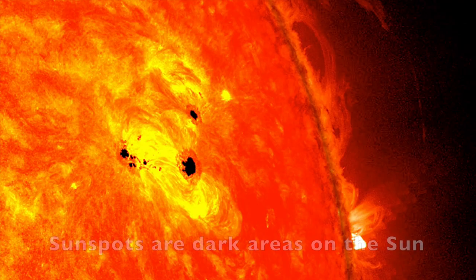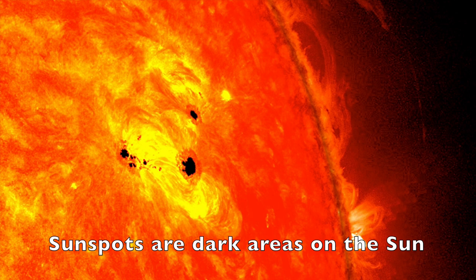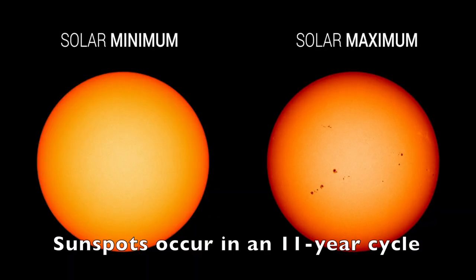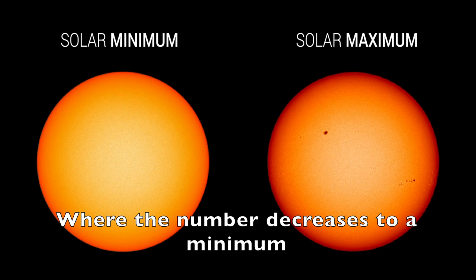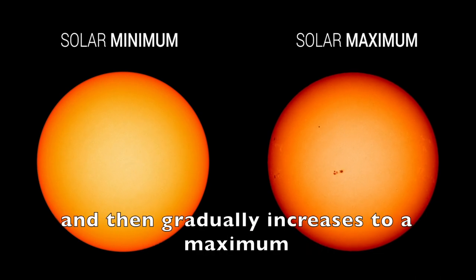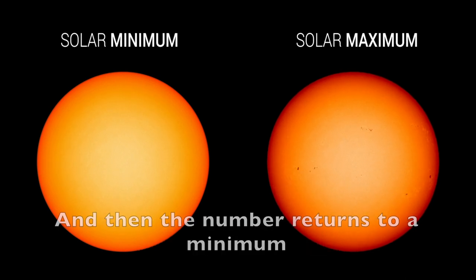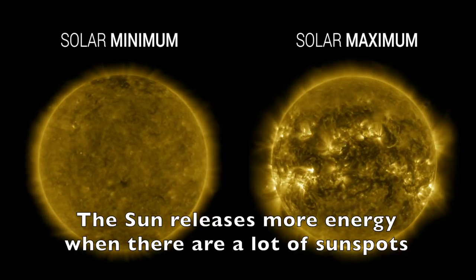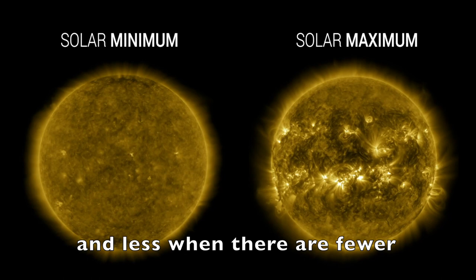First, let's talk about sunspots. Sunspots are dark areas on the sun caused by increased magnetic activity. Sunspots occur in an 11-year cycle where the number decreases to a minimum or small amount and then gradually increases to a maximum or larger amount and then the number returns to a minimum.